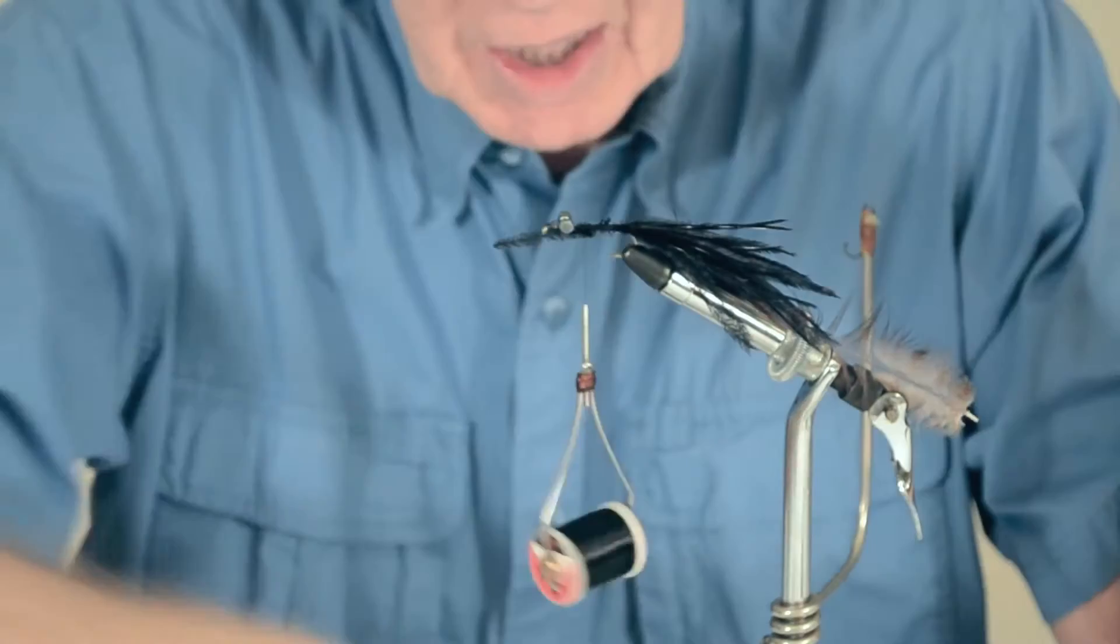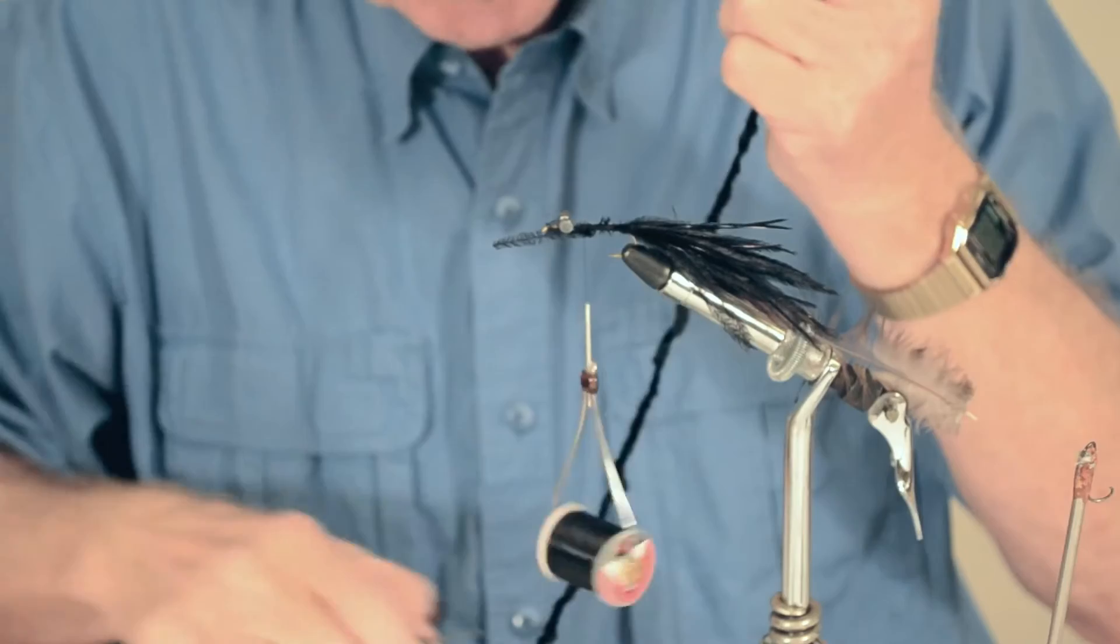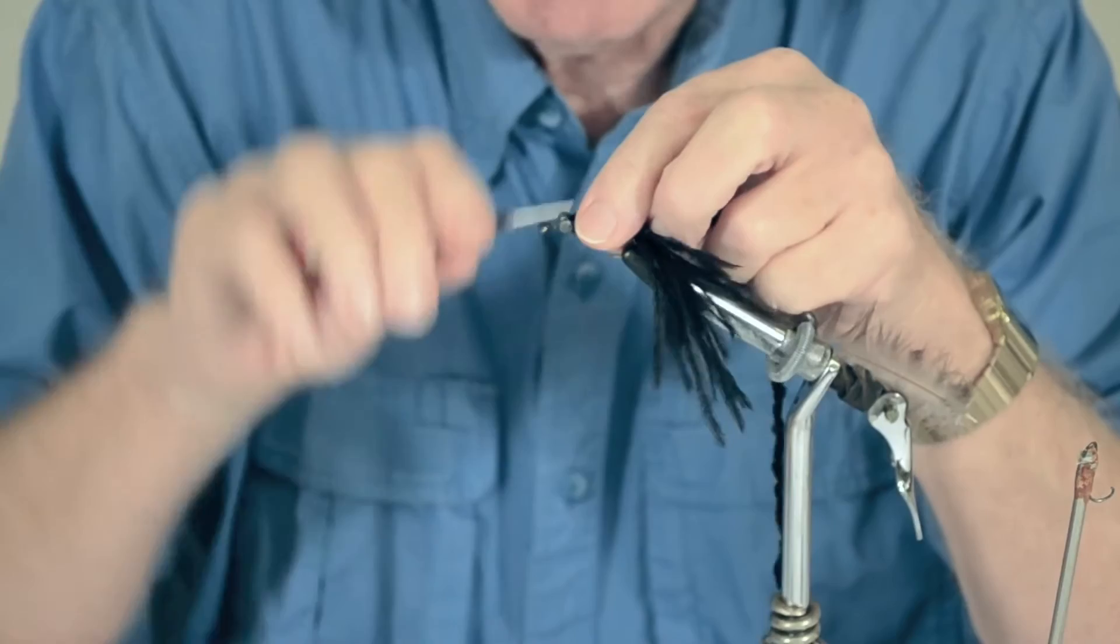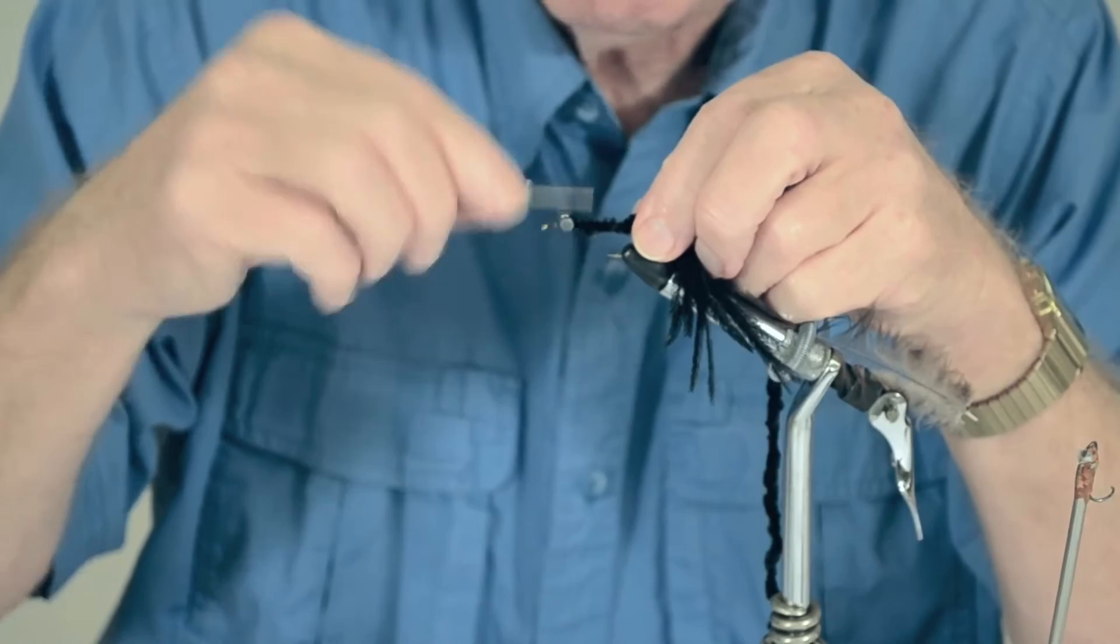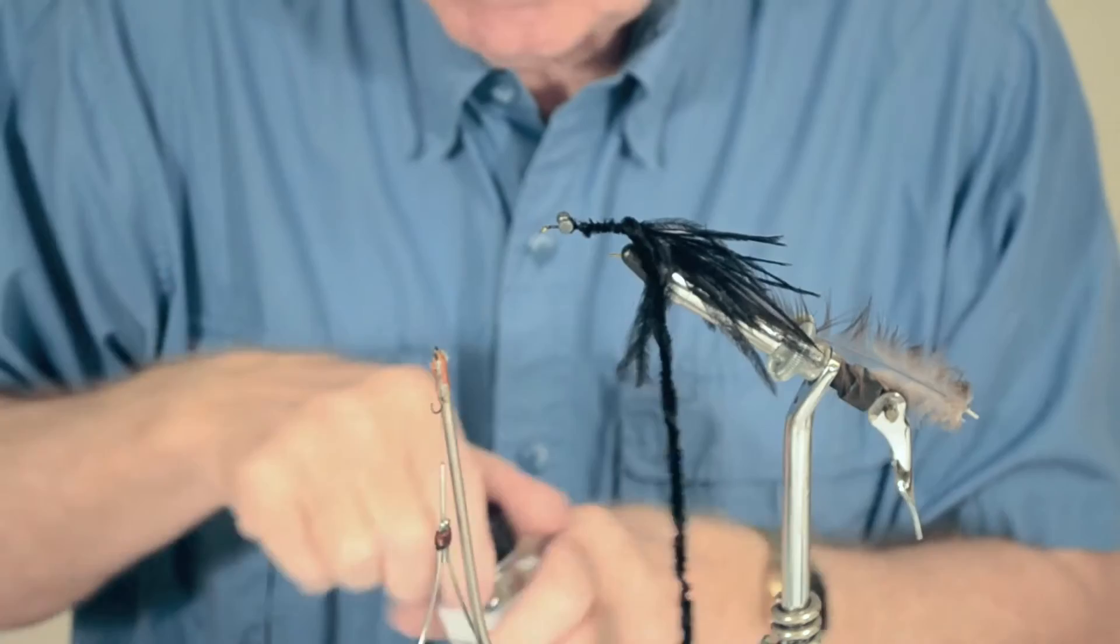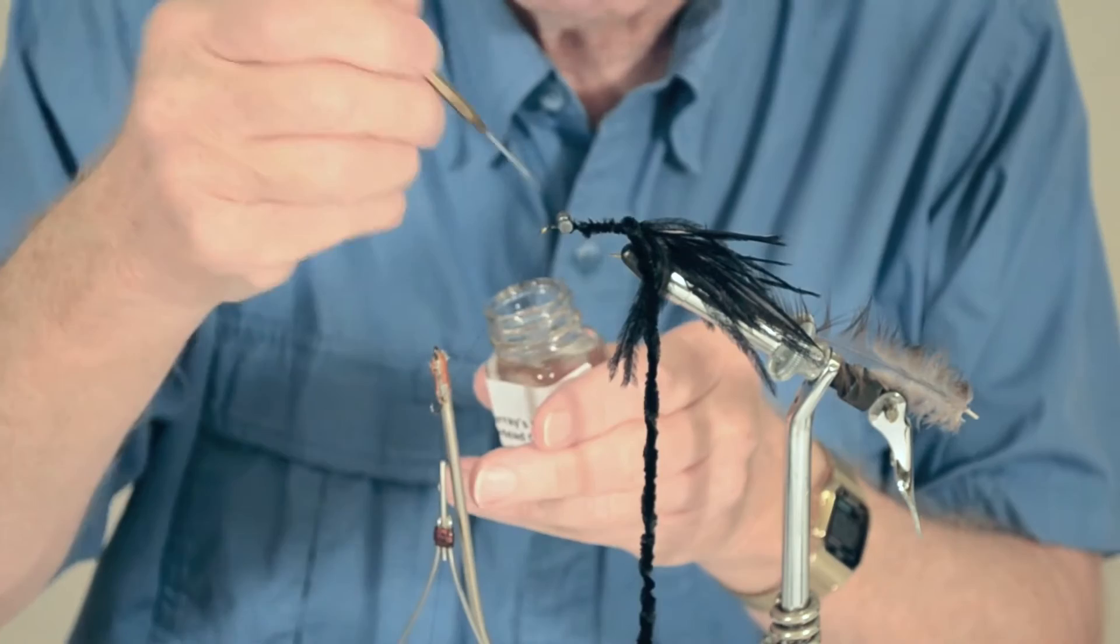The body on it is just basically the large black chenille. Cut off about a foot of that. Tie this in behind the eye. We're going to end up in front of the eye in a minute, but I want to get all this behind the eye. Just hold that down behind the eye. Get your thread up in front of the eye in this case. I do put a couple drops of cement in there at all those tie-in points just to help hold everything together.